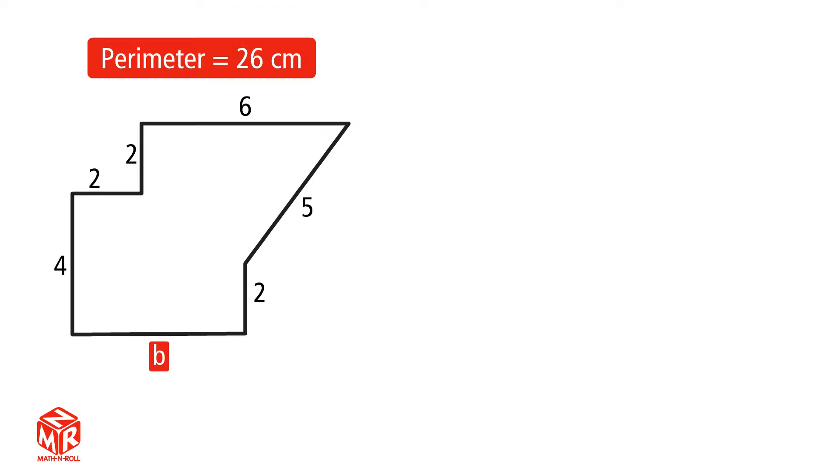We have a shape whose perimeter is 26 centimeters. Let's write the equation for the perimeter. To write the equation for perimeter, we have to make sure that we don't count numbers twice. So pick a side to start with and count counterclockwise or clockwise to find the equation. For this example, we're going to start from 2 and count counterclockwise.